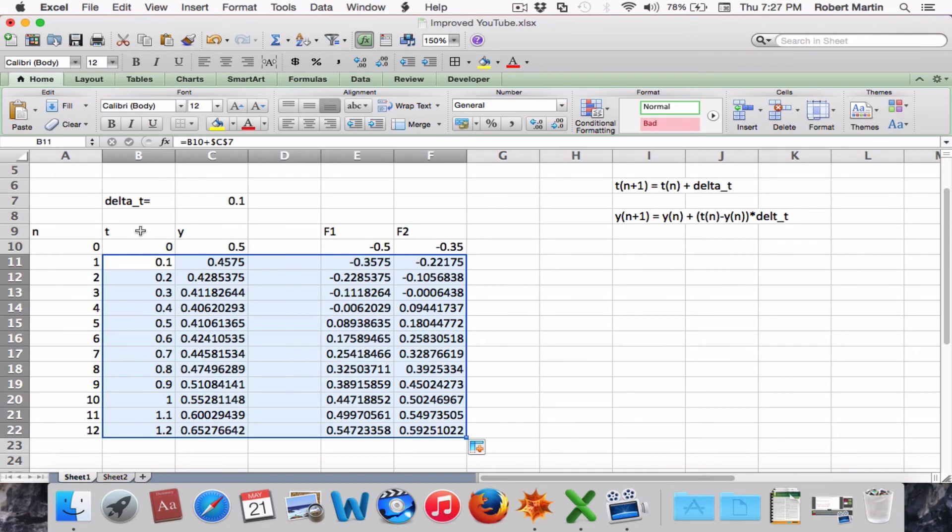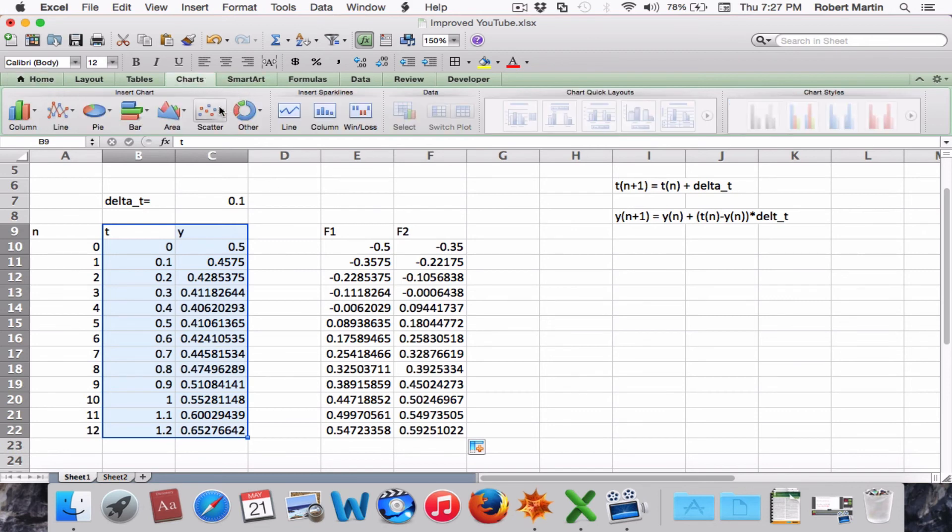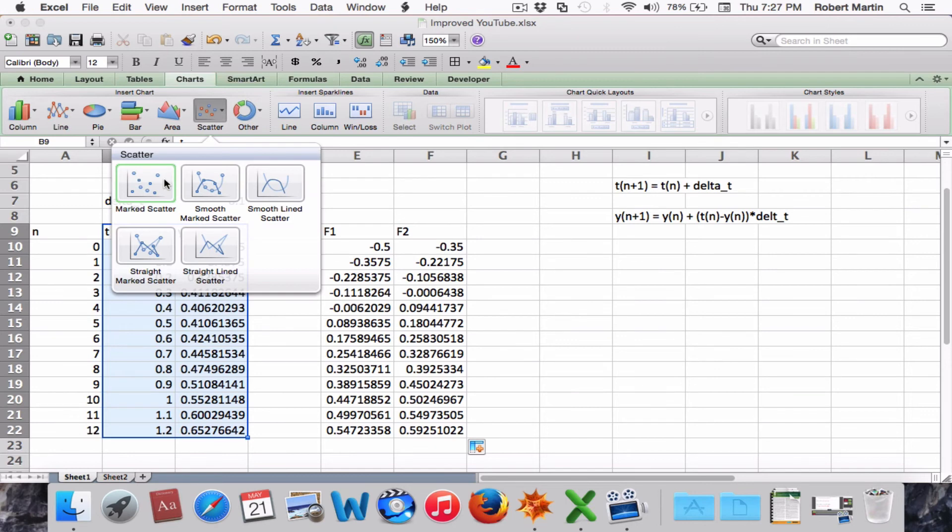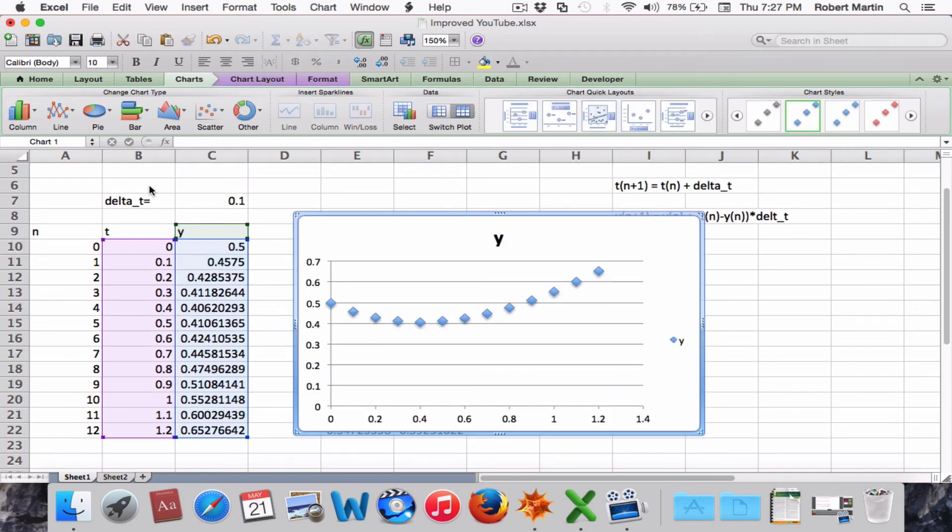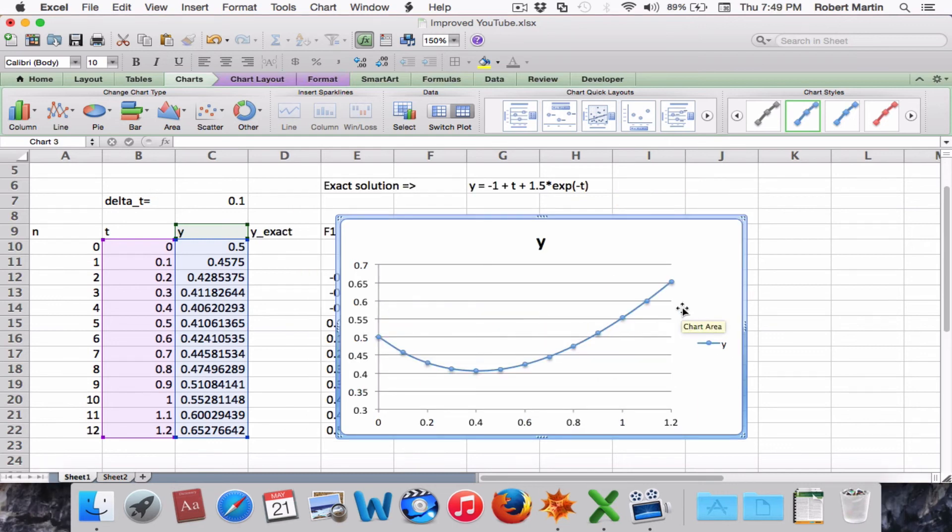We'll pull down the formulas. To graph our result we select T and Y columns and we select chart up above and we'll do a scatter chart and there we have it. Now after some editing as demonstrated in the previous video, our result T and graph looks like this. We can see the capacitor voltage starts at one-half and because the input voltage is below that value initially, the capacitor discharges and then begins to charge.